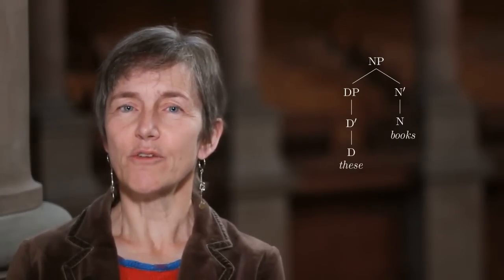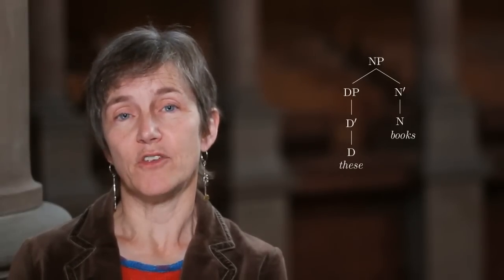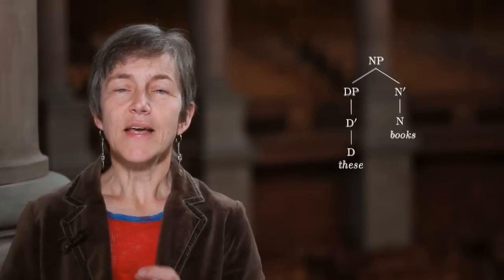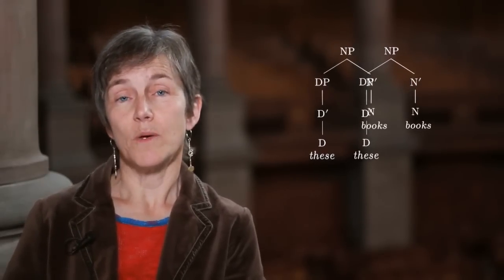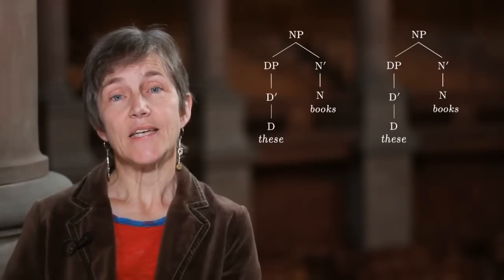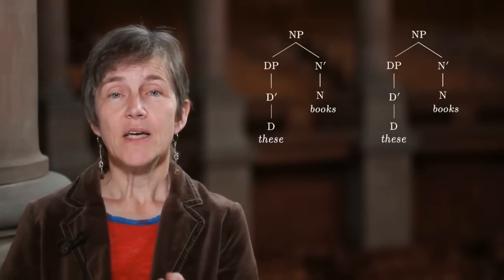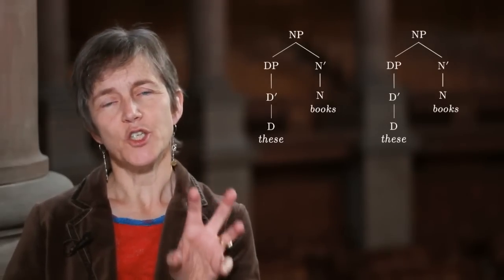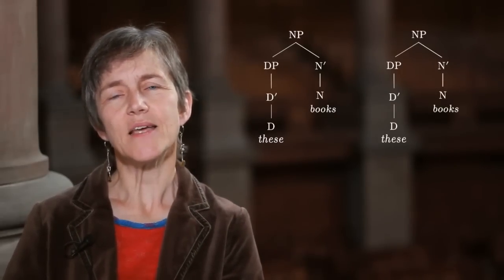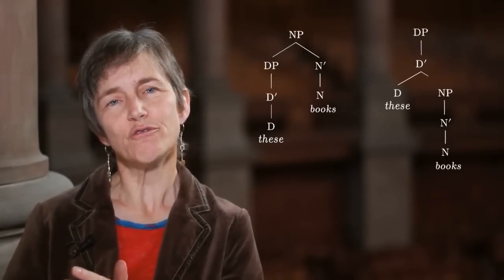That's one of the reasons that people have come up with an alternative hypothesis about the structure of these phrases with nouns. The second hypothesis about the structure of nominals — and in particular where the determiner is — is to say that rather than having the determiner as a projected determiner phrase in the specifier of the noun phrase, instead to suppose that the determiner is a head that takes the noun phrase as its complement.